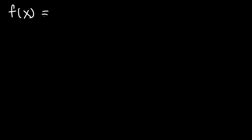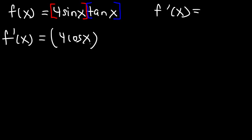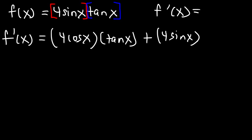Now let's try an example with trig functions. Let's say f of x is 4 sin x tangent x. Go ahead and find the first derivative of the function. It's good to separate it into two parts: 4 sin x is the first part, call that f, and tangent x is g, the second part. To differentiate it, we find the derivative of the first part: the derivative of 4 sin x is 4 cos x. The second part g we're not going to change. Then plus we keep the first part the same and find the derivative of the second part. The derivative of tangent is secant squared.